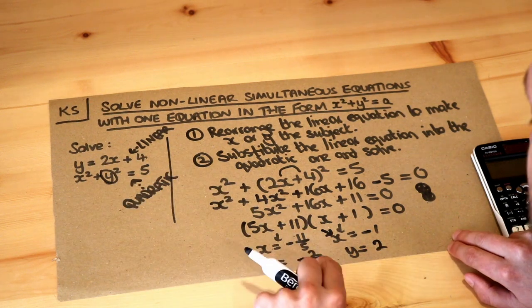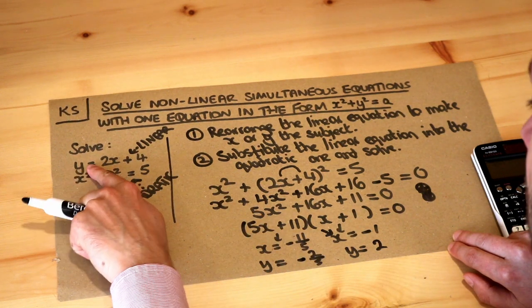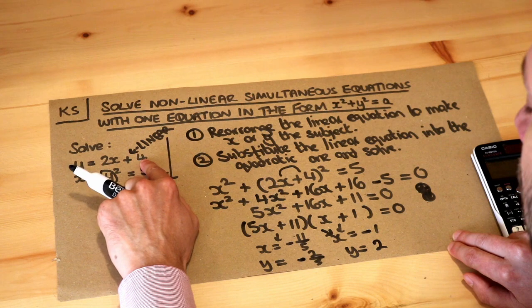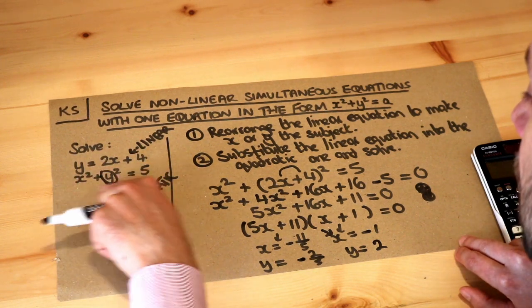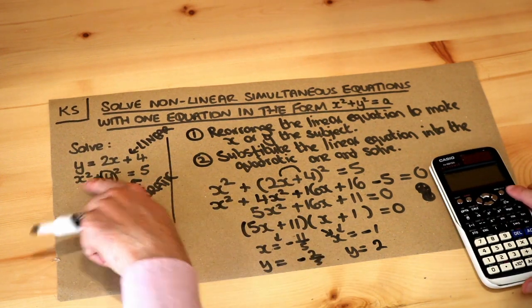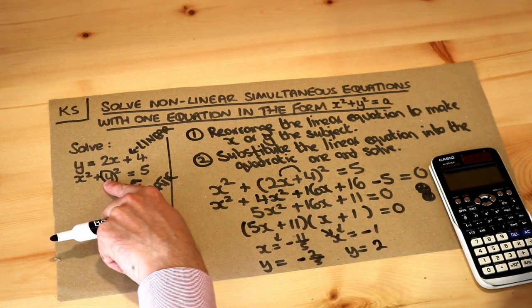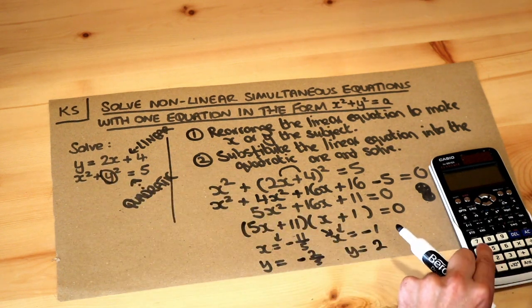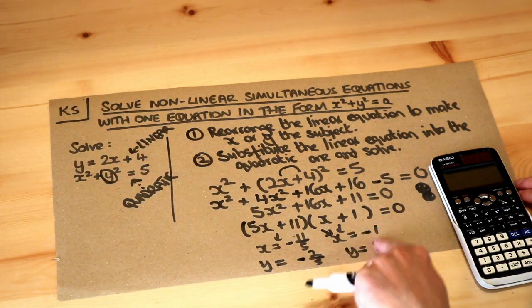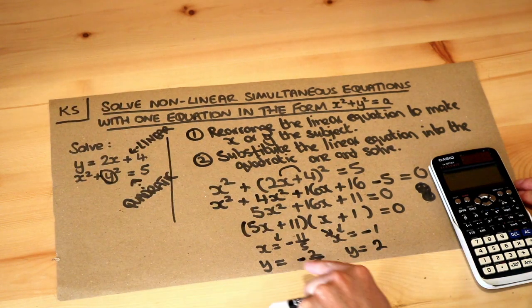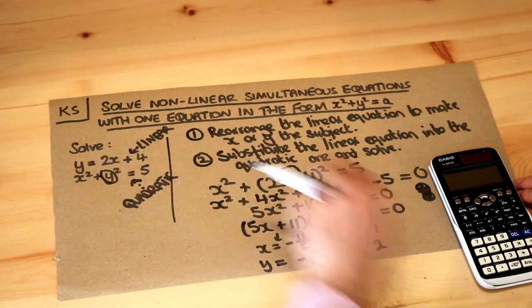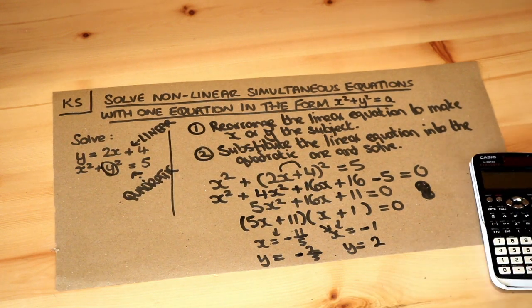Let's just check this pair of values with both equations. We can see that 2 is equal to 2 times minus 1 plus 4, that works. What about if we sub into the other equation? If I do x squared, so minus 1 squared is 1, plus y squared, so 2 squared is 4, 1 plus 4 is 5, it does work. So this pair of values works with both equations, and this pair of values works with both equations, so we've got the final solution.